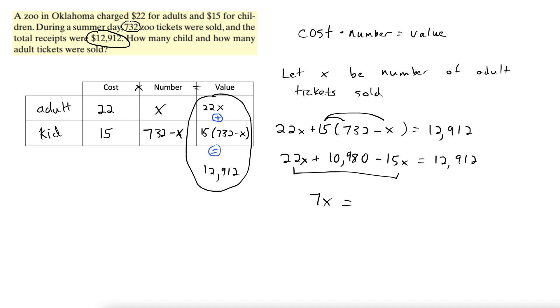I'm also going to subtract 10,980 from both sides. Doing that again with a calculator, 1932. Okay, 7x equals 1932, divide both sides by 7, we get x equals, again with a calculator, 276.